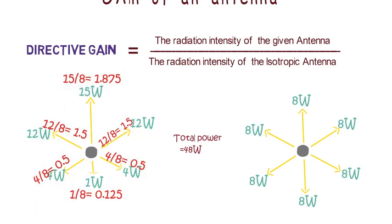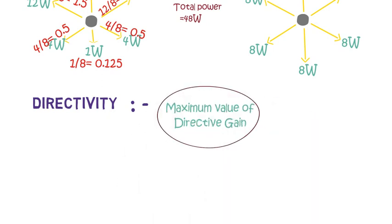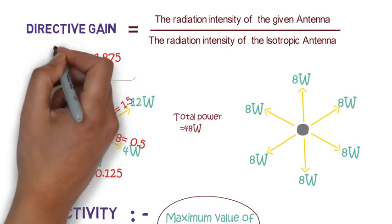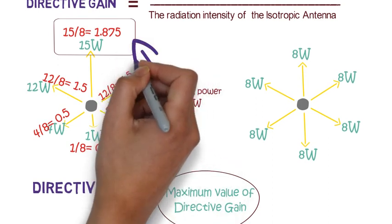Now the another quantity which describes gain is directivity. Directivity is nothing but the maximum value of directive gain. If we observe here, then we can see that the maximum directive gain is 1.875. So this is the directivity of the antenna.